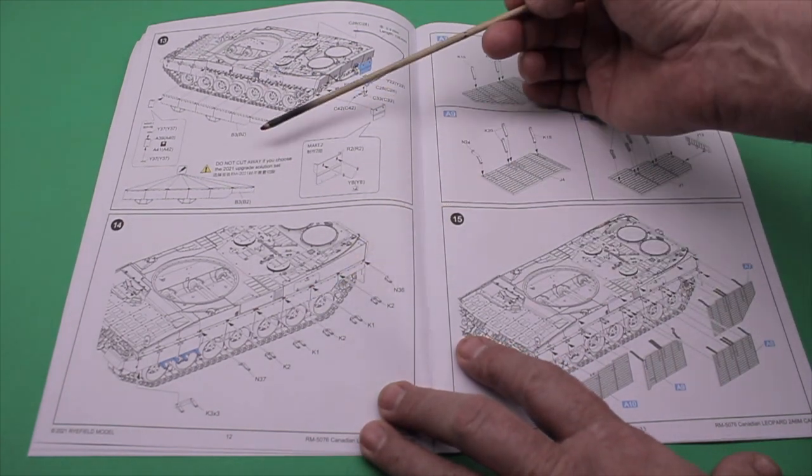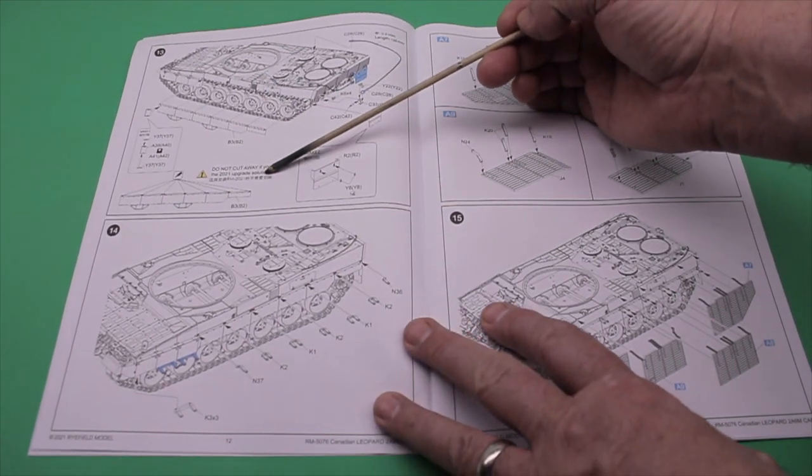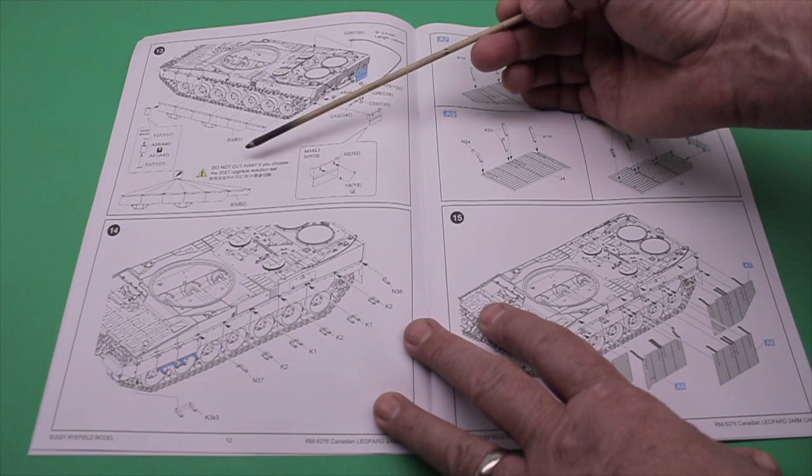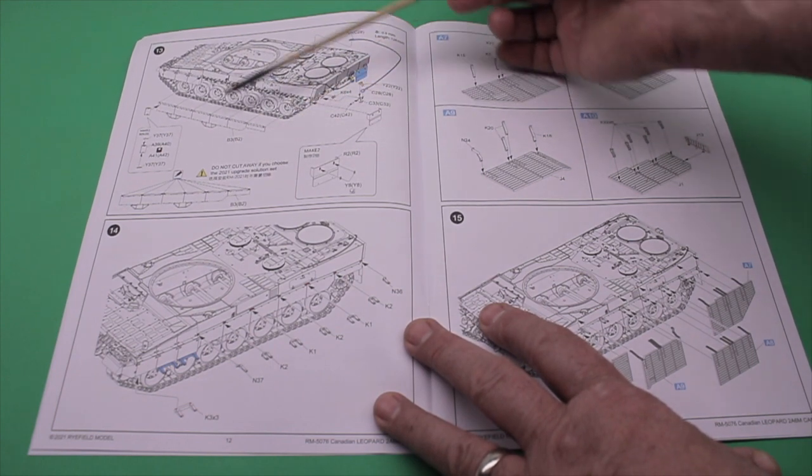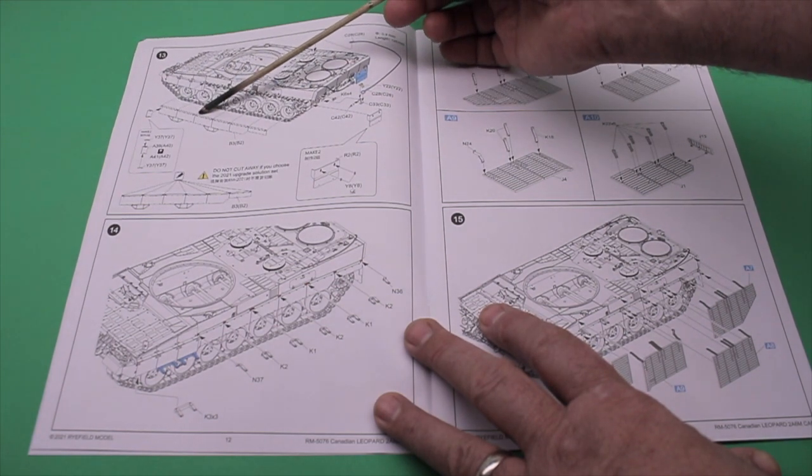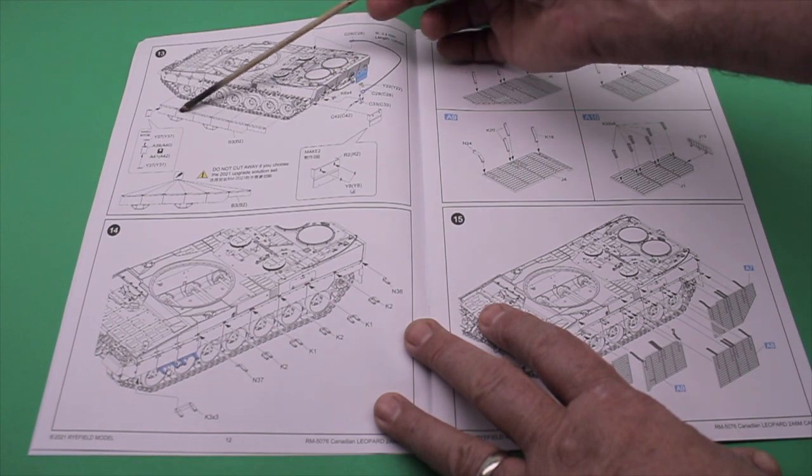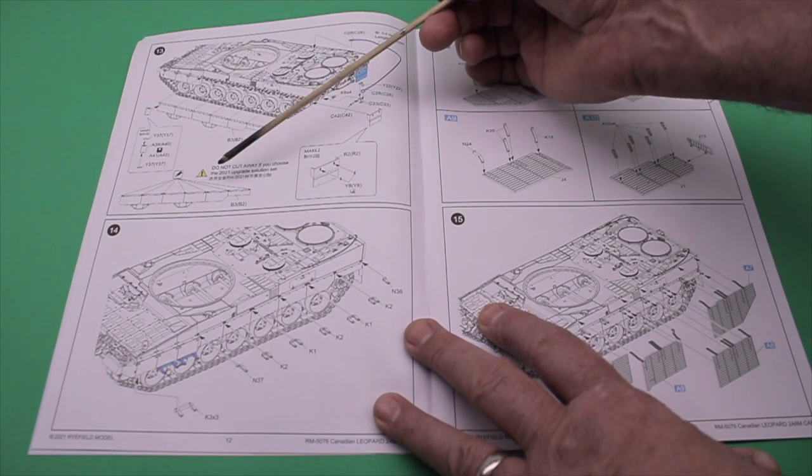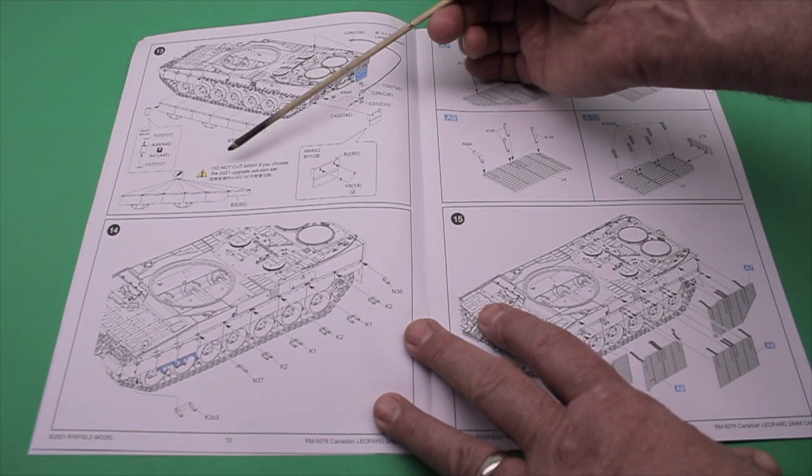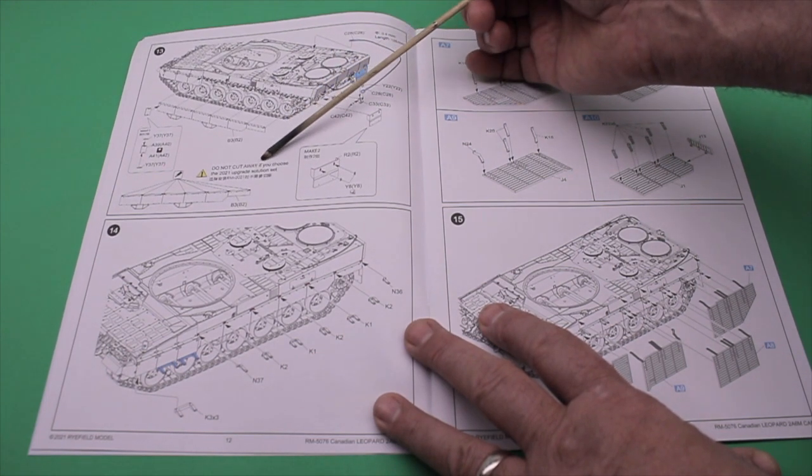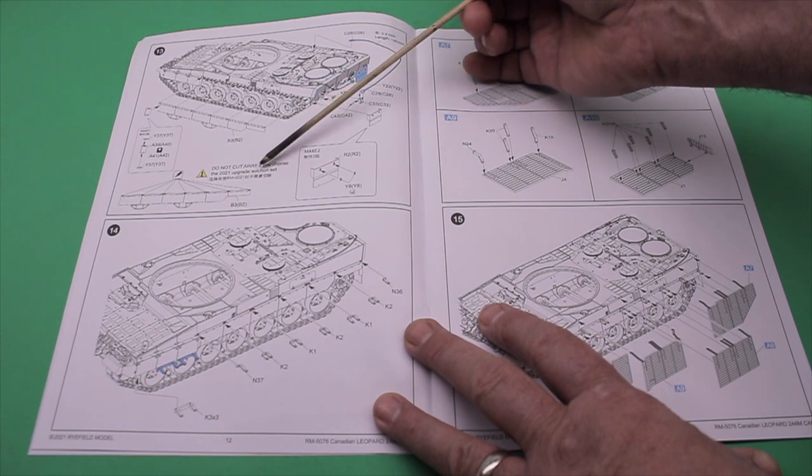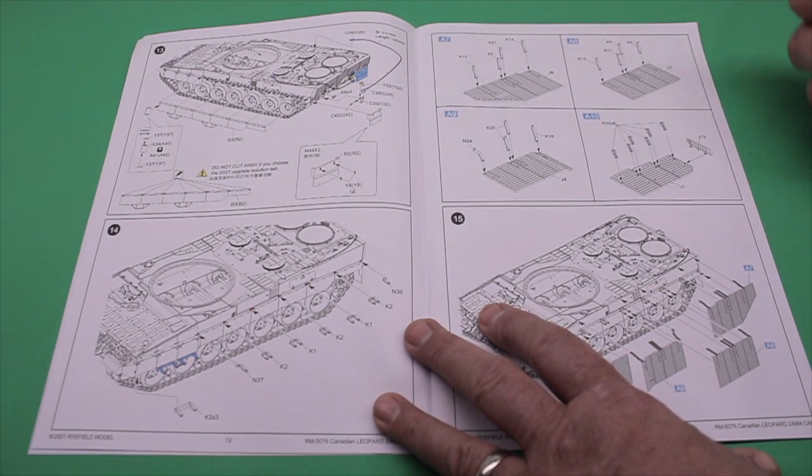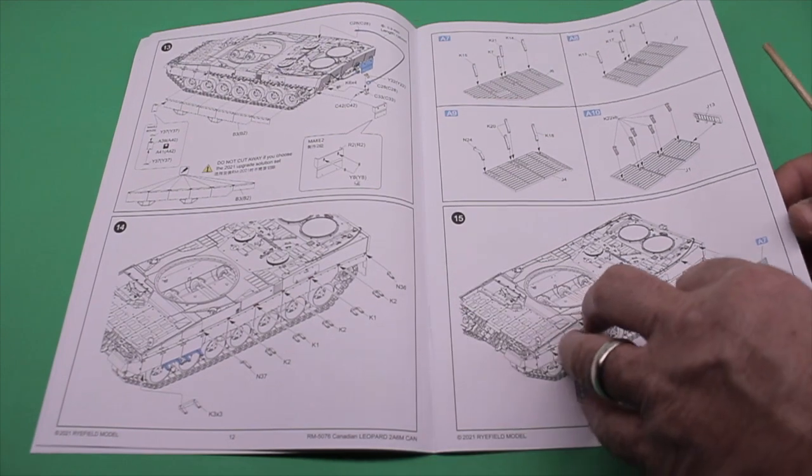Working your way through all the different aspects. Then you get into adding your supplemental armor. Now, here's the one part of the instructions that until I start building the model, it may make total sense. But at this point, I'm kind of at a loss as to what they were getting at, assuming they say do not cut away. And they've got these, basically, the pins and the nuts that hold on these side skirts. I'm assuming that you're going to cut those off to add on these parts here. But until I actually start building it, I'm not 100% positive. And the way they do these instructions, you know, do not cut away if choose the 2021 upgrade solution set. Well, that's the only place anywhere you see that indication. I'm assuming the supplemental armor is what they're referring to, but at this point, I don't know yet.